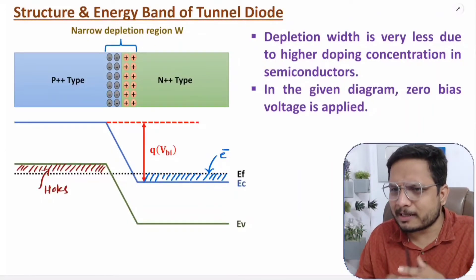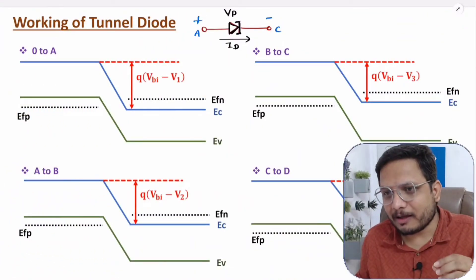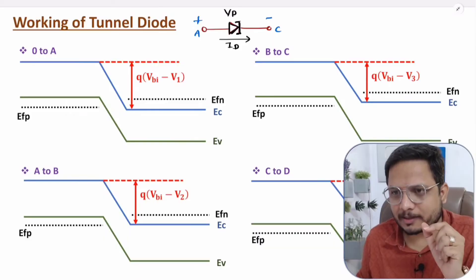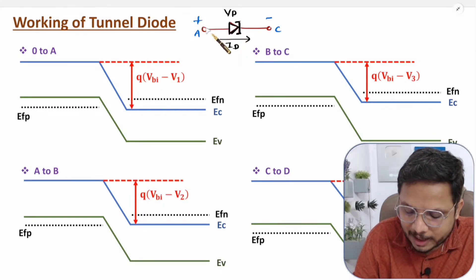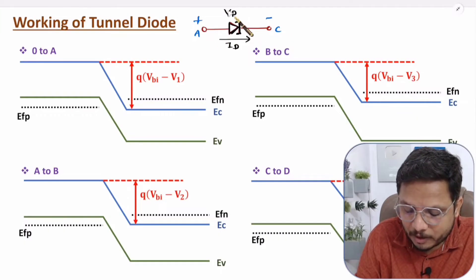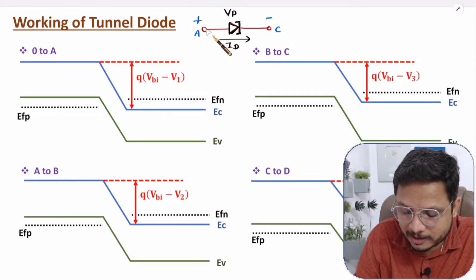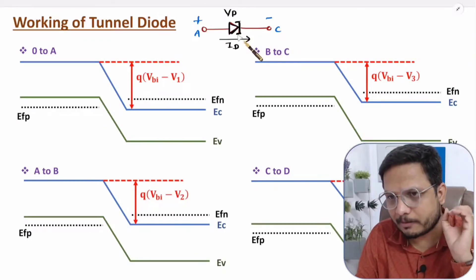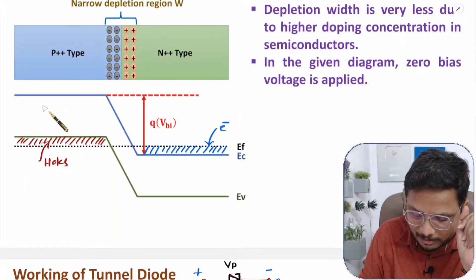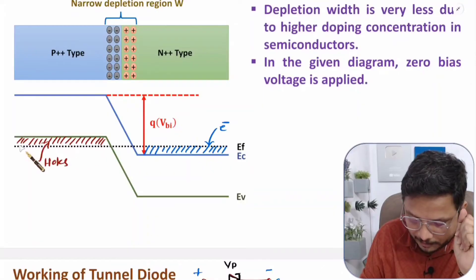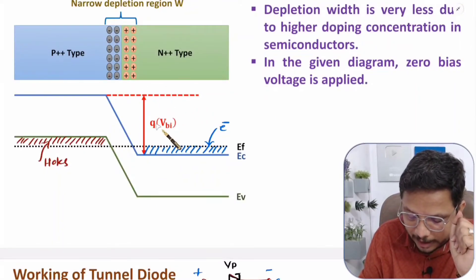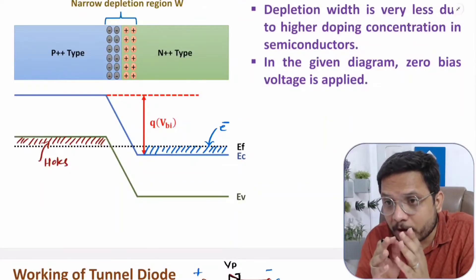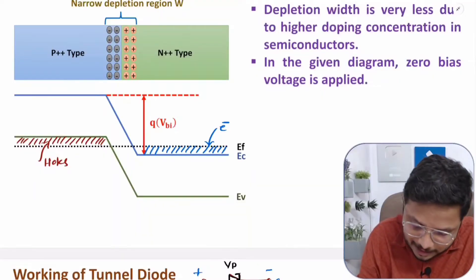To understand the working of tunnel diode I'll explain it in forward bias. To apply forward bias, the anode is connected to the positive terminal of the battery and cathode to the negative terminal; we apply forward bias voltage Vd and observe the current Id. Initially we keep Vd at zero, so the energy band diagram shows the Fermi energy level alignment and the band bending of q×Vbi due to the depletion region.